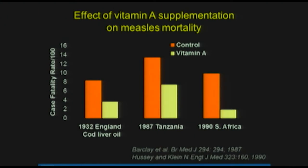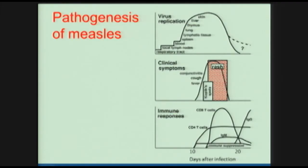The only intervention we have for measles once you develop the disease is vitamin A, and we must mention that because it's been an important contribution of Al Sommer here at Johns Hopkins. The orange bars are mortality in the absence of vitamin A, and the white and yellow bars show mortality if you supplement children with vitamin A. Three different types of studies have shown that vitamin A definitely decreases mortality. But other than that, we have no interventions other than antibiotics for secondary bacterial infections.